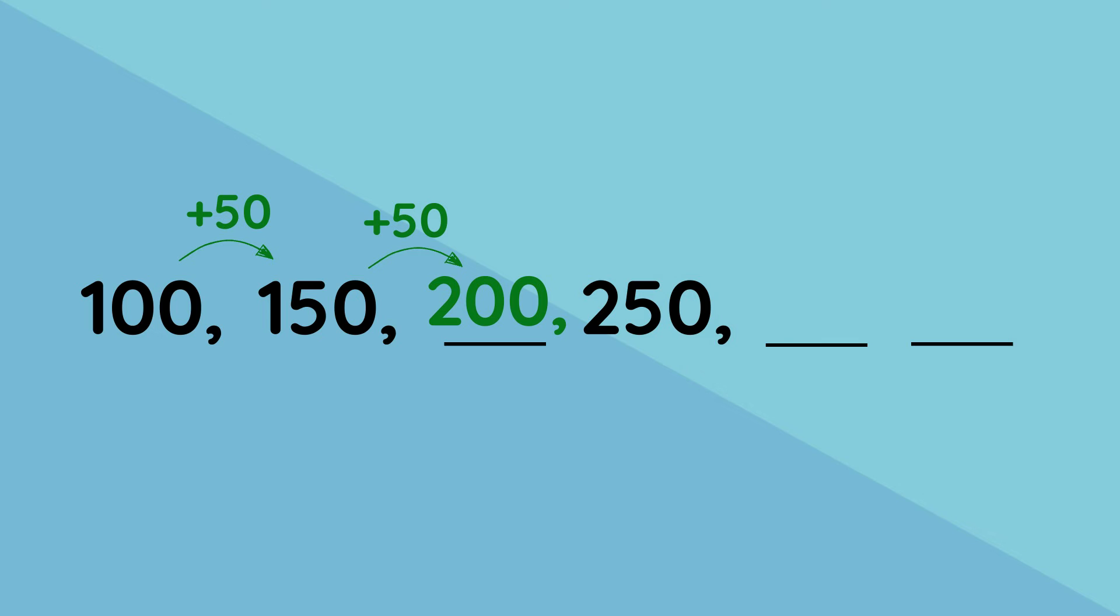So we know now that the pattern is add 50. To figure out the last missing numbers in the pattern, we then add 50 to the previous number. So 250 plus 50 is 300. And then to get the last missing number, we add 50 again. 300 added to 50 gives us 350.